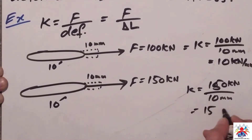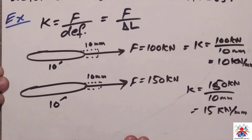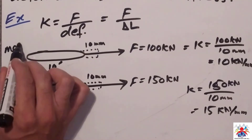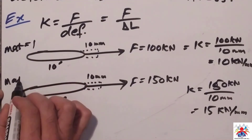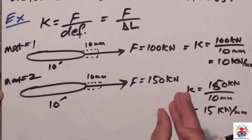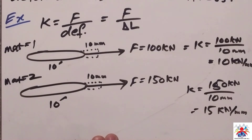These examples show that material 1 has a stiffness of 10 kN/mm and material 2 has a stiffness of 15 kN/mm. Material 1 is less stiff than material 2. That's it for today — thank you for watching, and please don't forget to subscribe to my channel.